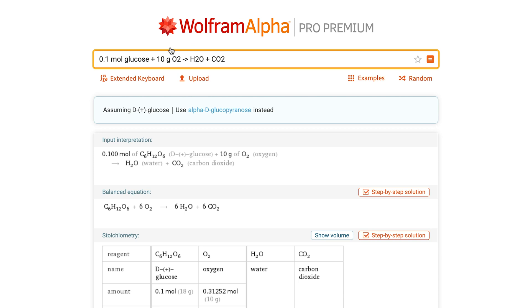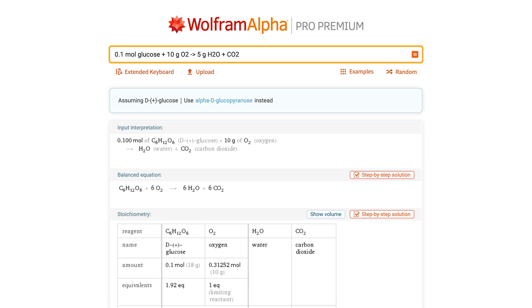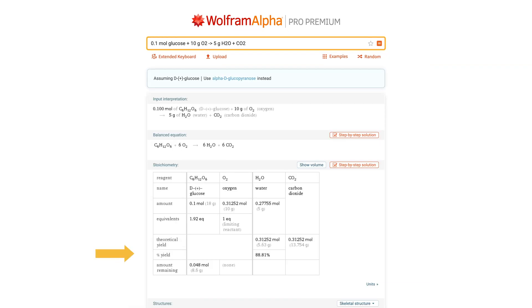Additionally, if the amount of any product is given, for example, 0.1 mol glucose plus 10 grams O2, arrow 5 grams H2O plus CO2, Wolfram Alpha computes the yield percent too.